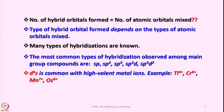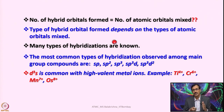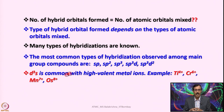Earlier I stated that the number of hybrid orbitals formed equals the number of atomic orbitals mixed — but is that always true? There is an exception. Also, for tetrahedral complexes of early transition metals in their highest oxidation state, they do not necessarily use SP3 hybridization; sometimes they utilize all D orbitals, showing D3S hybridization — quite common with high-valent metal ions.